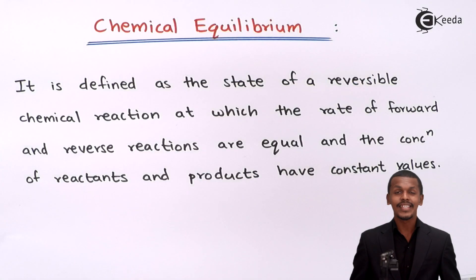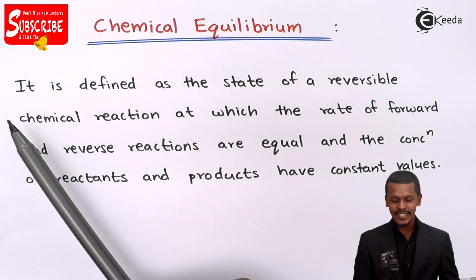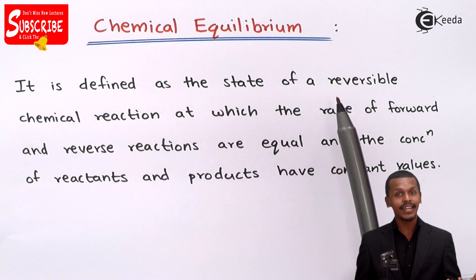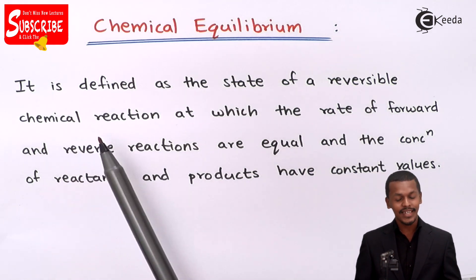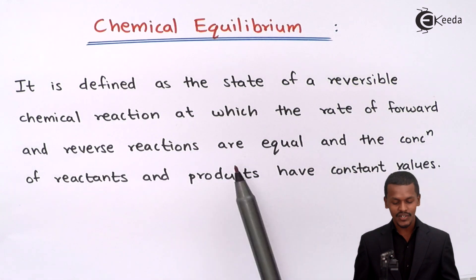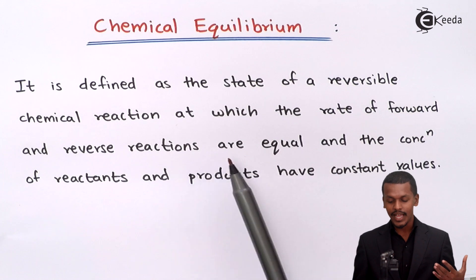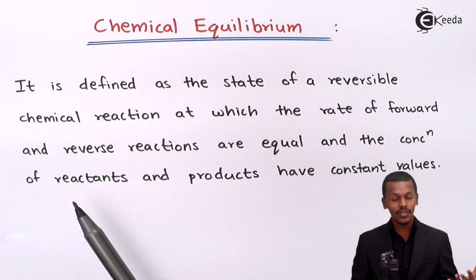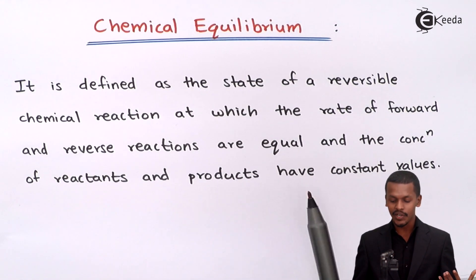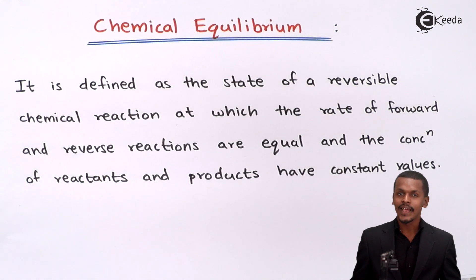Chemical equilibrium is defined as the state of a reversible chemical reaction at which the rate of forward reaction and the reverse reaction are equal, and the concentration of the reactant and the product have constant values. This is known as chemical equilibrium.